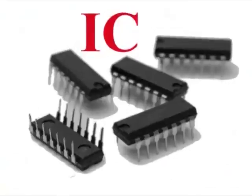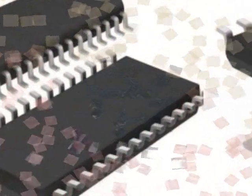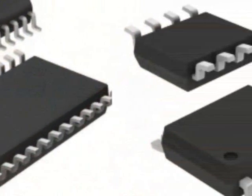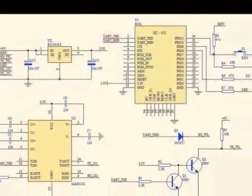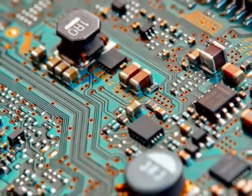An integrated circuit, IC, sometimes called a chip, microchip, or microelectronics circuit, is a semiconductor wafer on which thousands or millions of small resistors, capacitors, transistors, and diodes are built.